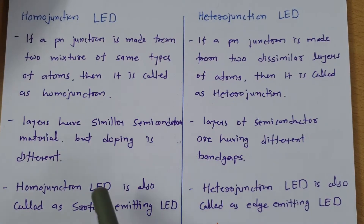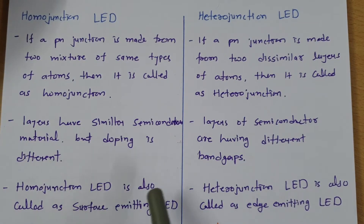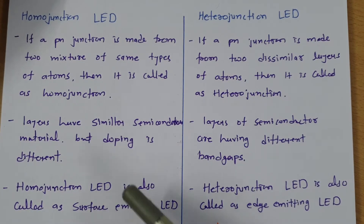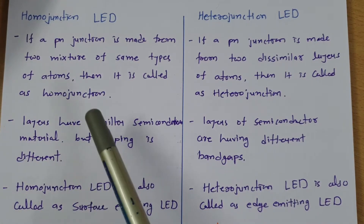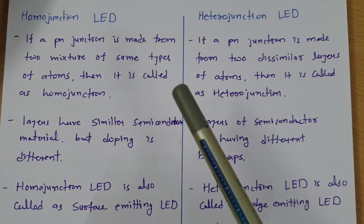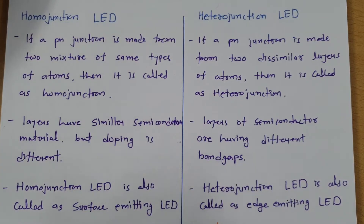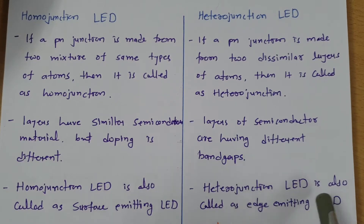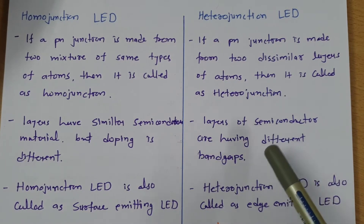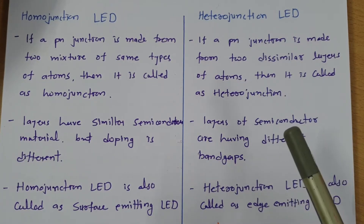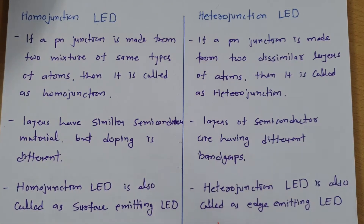Homo junction LED is also called a surface emitting LED. In surface emitting LED, we use homo junction — two similar semiconductor materials for N and P type layers, with only the doping being different. In the case of hetero junction LED, it is referred to as an edge emitting LED, and it uses two different layers with different band gaps.